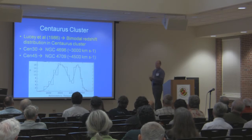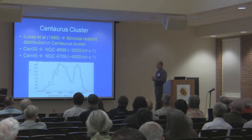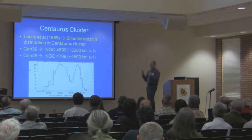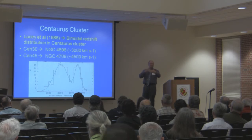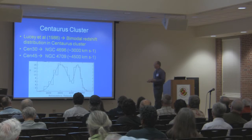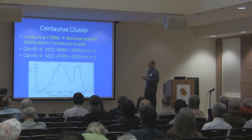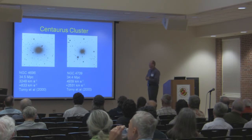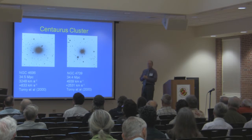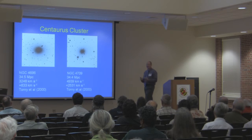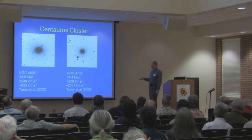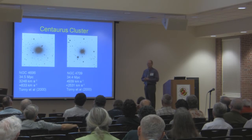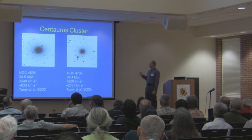The Cen 30 cluster centered around NGC 4696, a massive elliptical galaxy, has an average redshift of around 3,000 kilometers per second. The Cen 45 sample centered around NGC 4709 has a redshift of about 4,500 kilometers per second. According to Hubble's law, there should be about a 20 megaparsec distance difference between these two sub-clusters. However, Lucey noted that based on the diameters of all galaxies in both samples, they might actually be at the same distance. This was confirmed using the surface brightness fluctuation method: NGC 4696 is at 34.5 megaparsecs, NGC 4709 is at 34.4 megaparsecs — they're not separated by Hubble distances. They're actually at the same distance, yet there's an excess redshift of over 2,500 kilometers per second for NGC 4709.